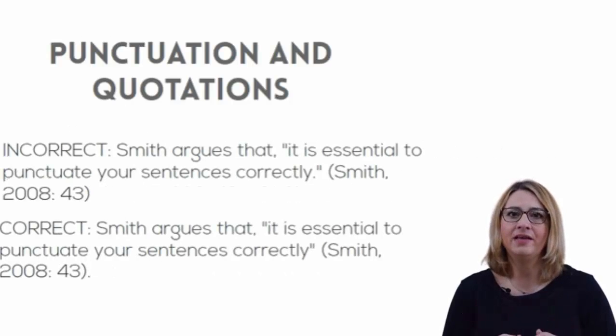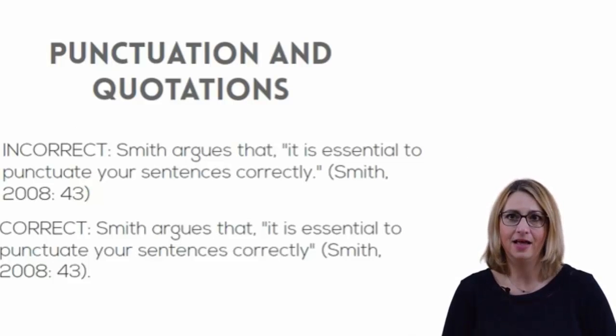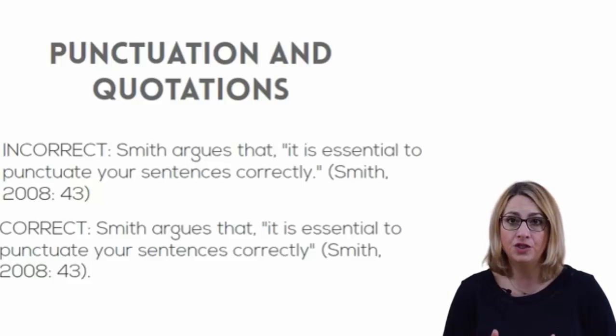When quoting from sources within your text, use the following conventions. Keep quotations brief. If quoting short text word for word within a sentence, enclose the quotation in the appropriate quotation marks for your referencing style. If quoting a longer piece of text word to word, set it out in a new paragraph with no quotation marks, indented from the main text. It is very important that you do not forget to punctuate your sentences when quoting or paraphrasing. The full stop must always be placed on the outside of the last bracket.